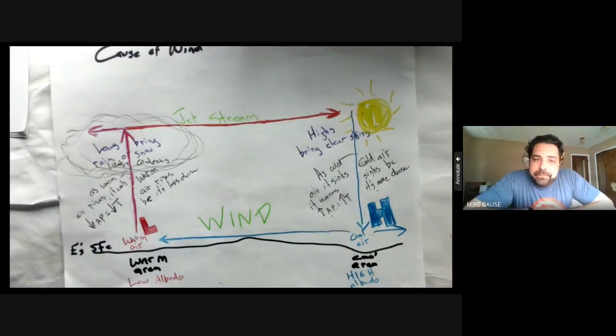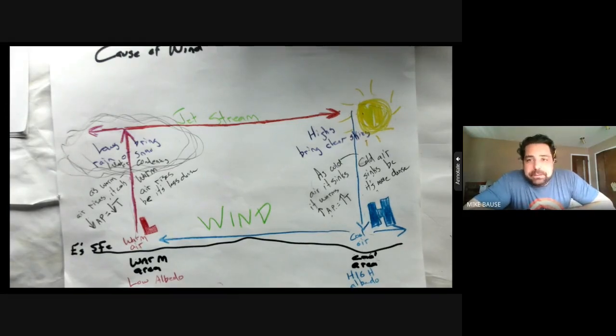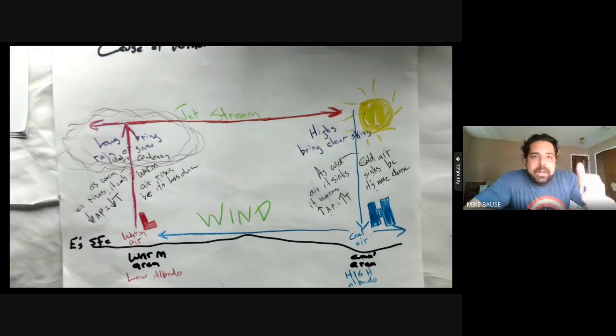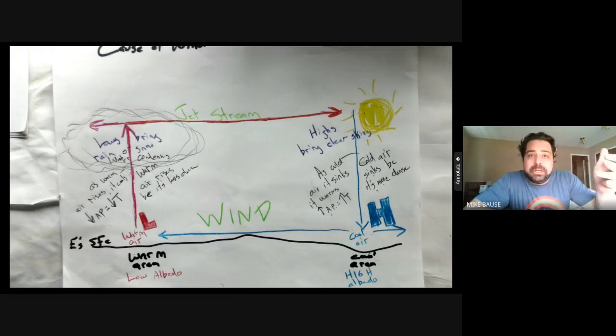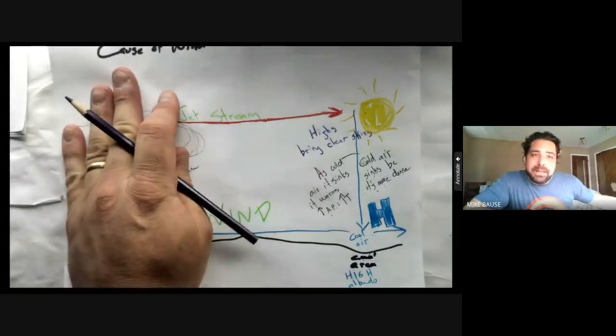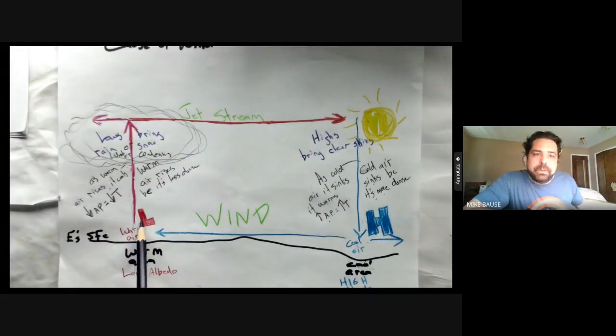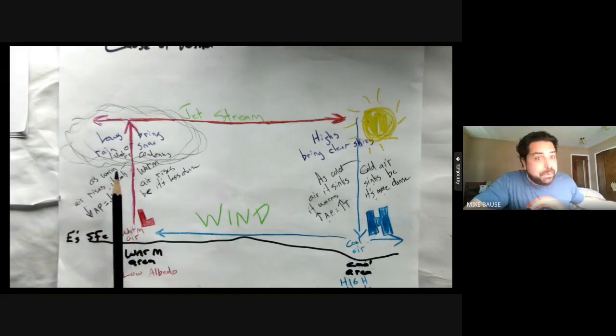When I say the cause of wind diagram is the explanation for all weather, I quite literally mean it. Any clear day can be explained by the right side of this diagram. Any rain - thunderstorms, light rain, tornadoes, hurricanes - are explained by the left side. Frankly, what is a tornado? It's a really strong isolated low air pressure where air is rising really fast. Same thing with a hurricane.